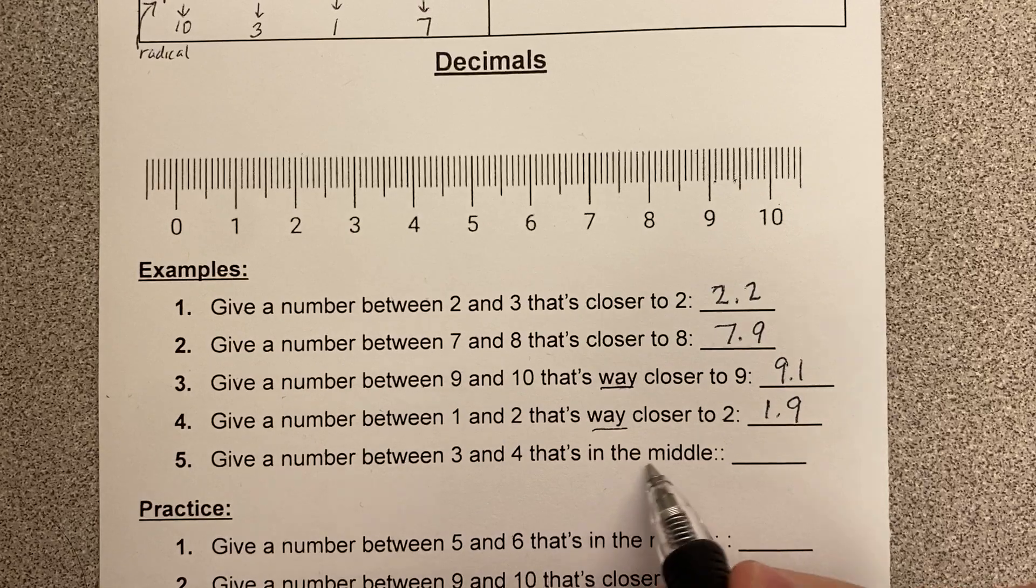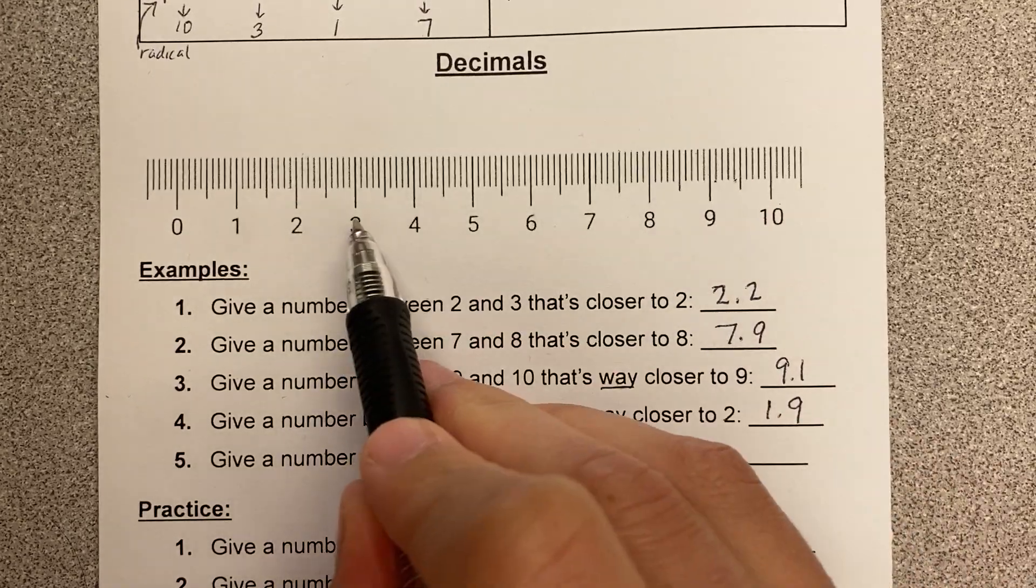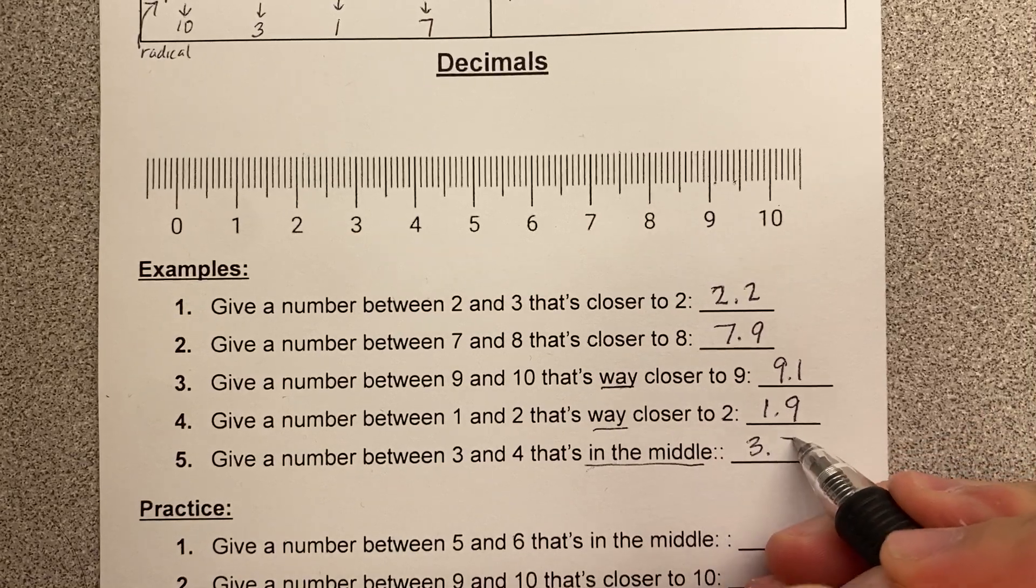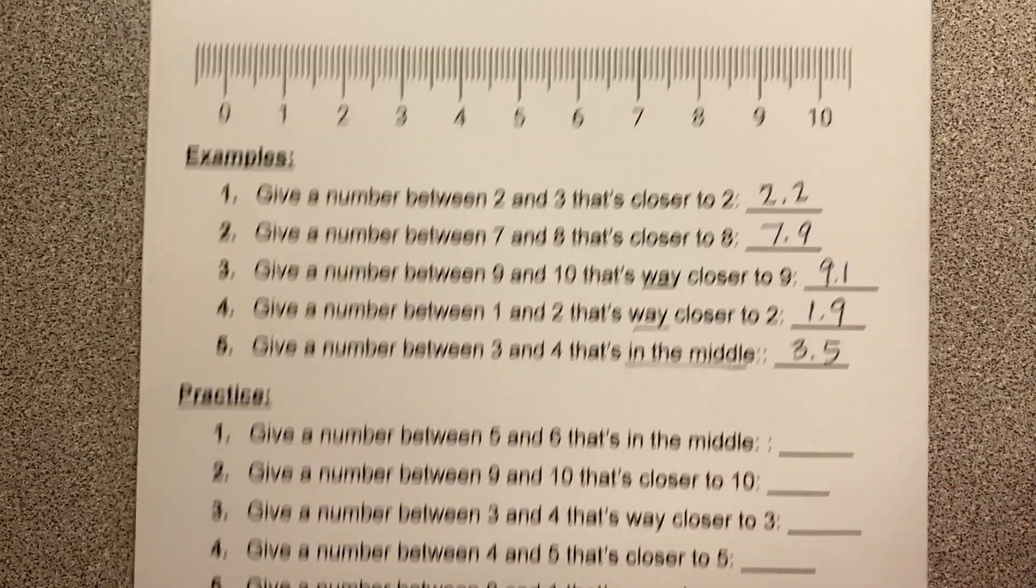Okay, give a number between 3 and 4. That's in the middle. So 3 and 4, right in the middle would be 3.5. Okay, you're going to go ahead and try these below.